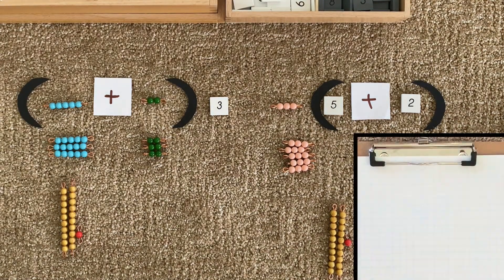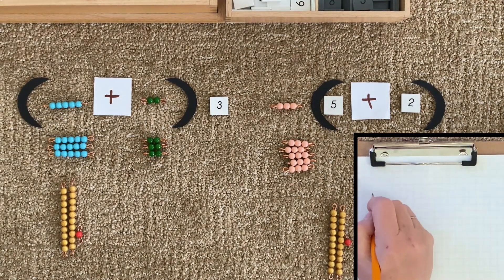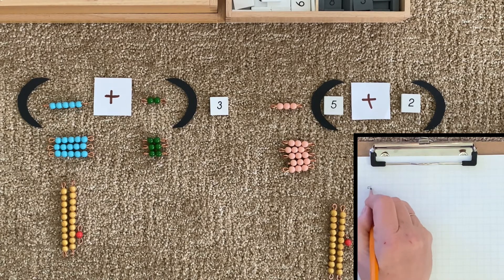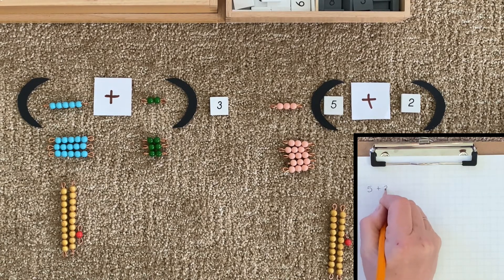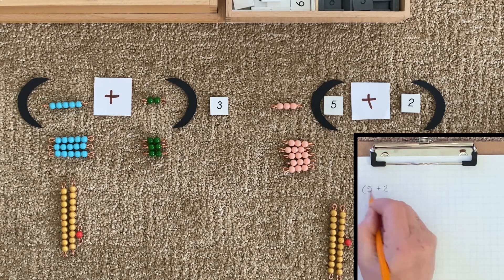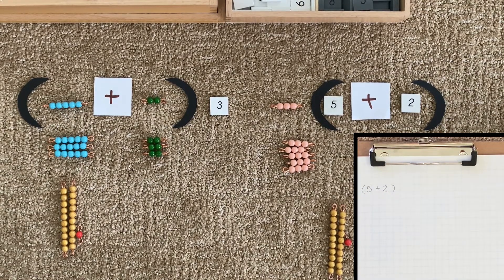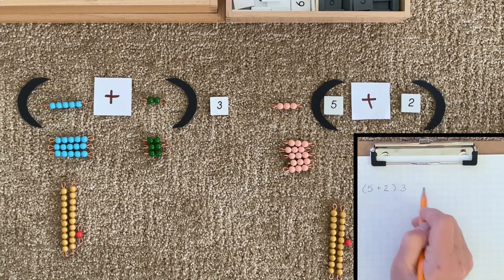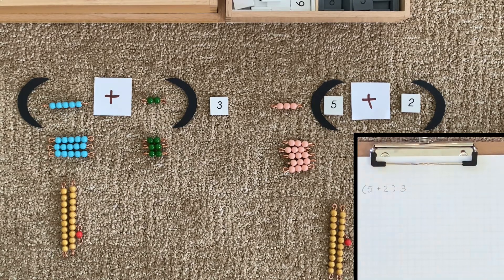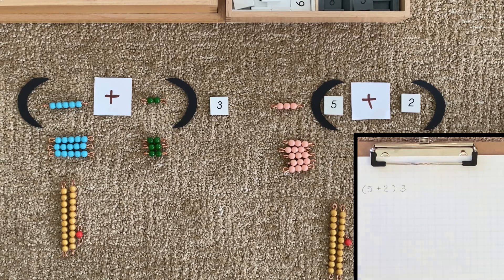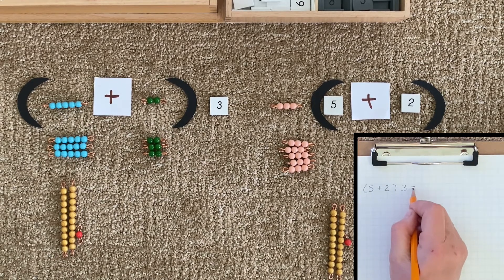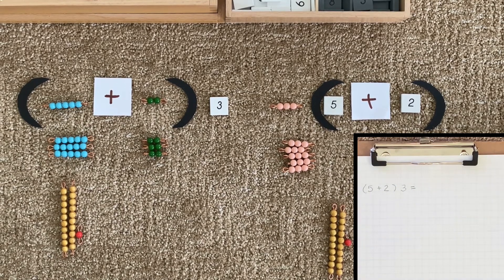So when we take this to pencil and paper, it looks like this. Five plus two, let's put our brackets. Remember, we don't need the multiplication sign because mathematicians have concluded that the parentheses means to multiply, multiply by three. And what was our product? It's 21.